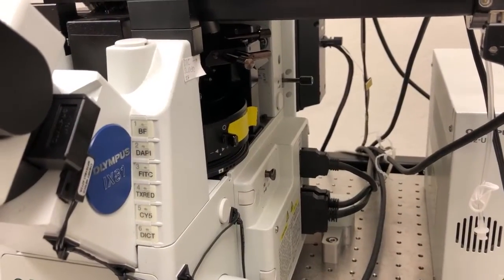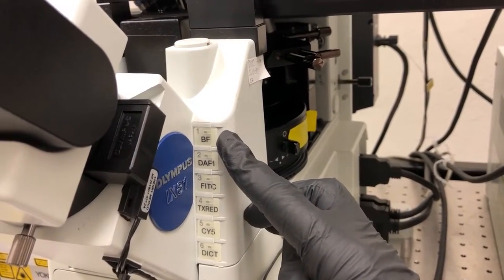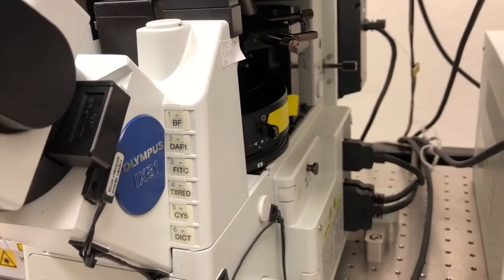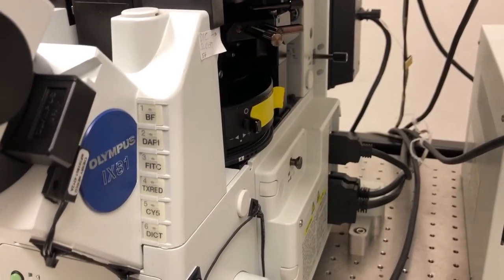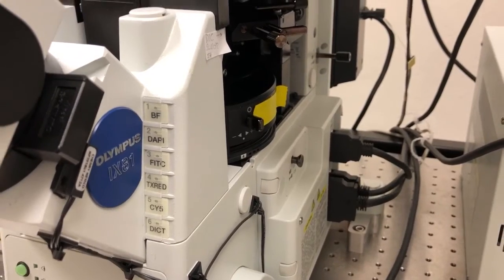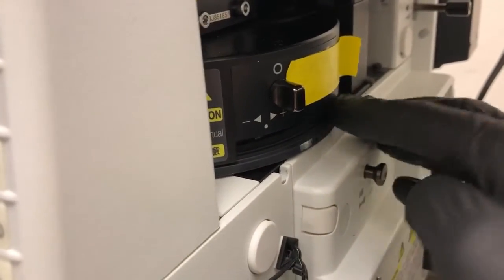The next thing we need to do is to make sure that the turret position is in number one. That's the same position as the bright field, and the reason for that is that position number one is an empty position, which allows the lasers to get into the sample without any problem. So right now, it is not on position number one. So I'm going to rotate this and put it in position one.